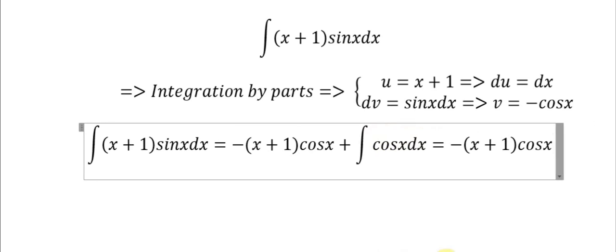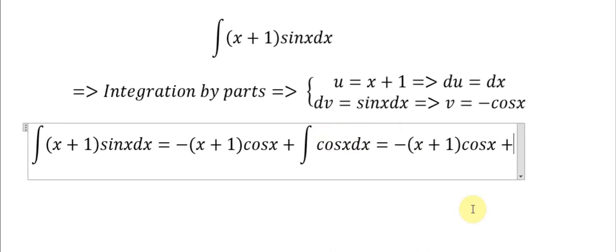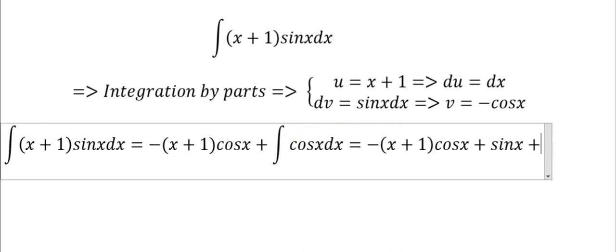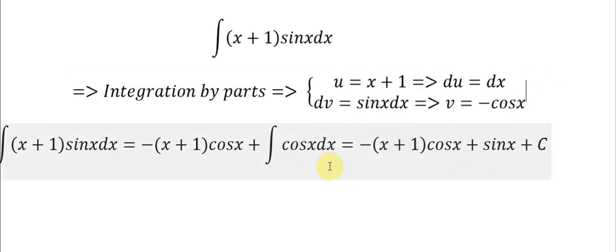The integral of cosine x will change to sine x. So here is the answer for the question: (x + 1) sine x dx = -(x + 1)cos x + sin x + C. That's it, the end. Thank you for watching.